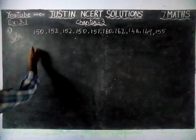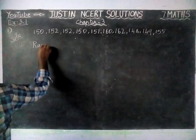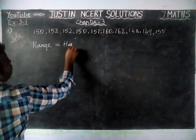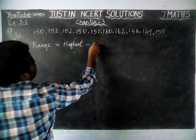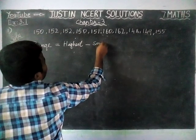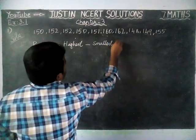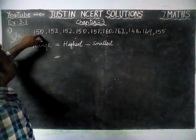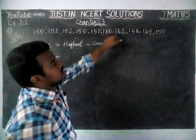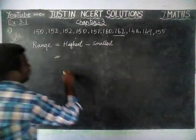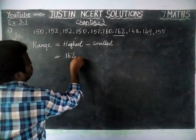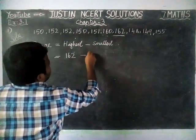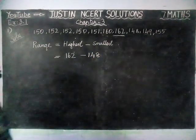The meaning of range is: Range = Highest value minus Smallest value (or Lowest value). Here, the highest value we have to find. Looking through the values — 162 is the highest value. So, highest value = 162. The smallest value here is 148, so smallest value = 148.